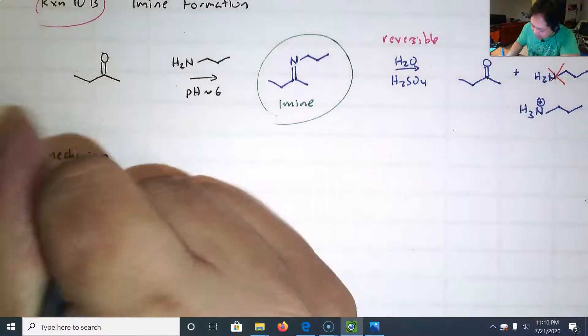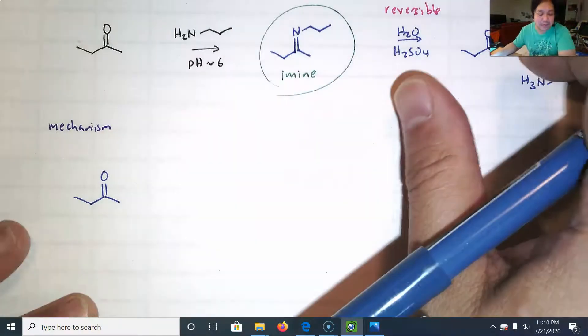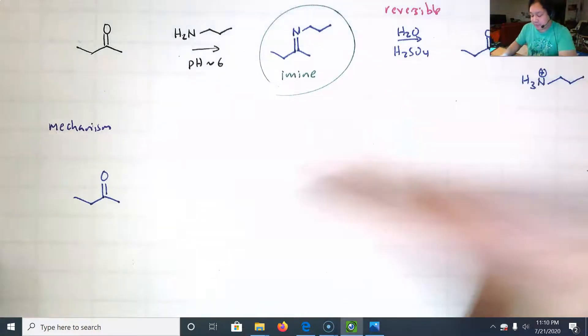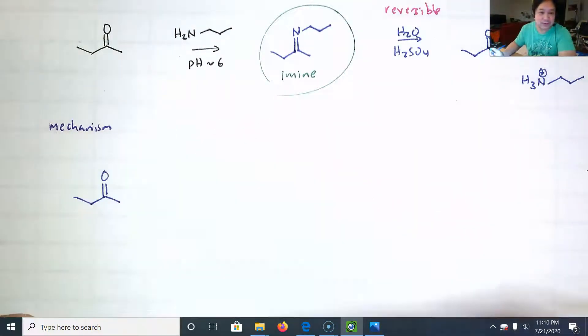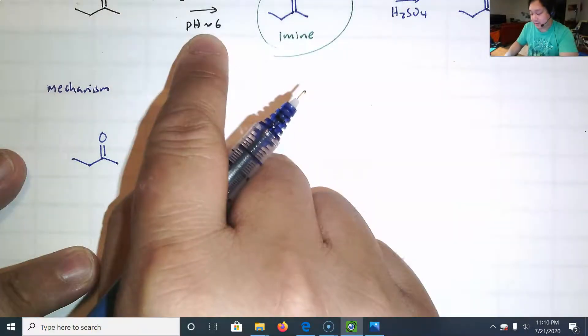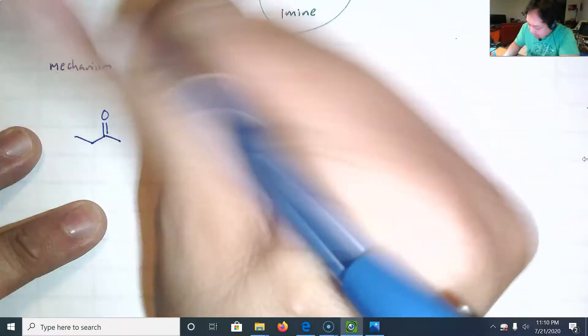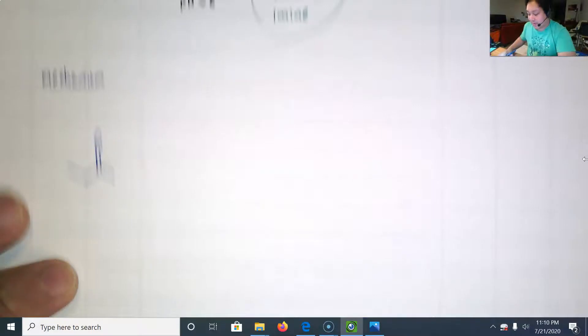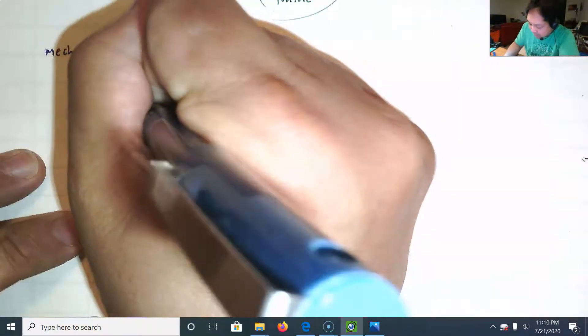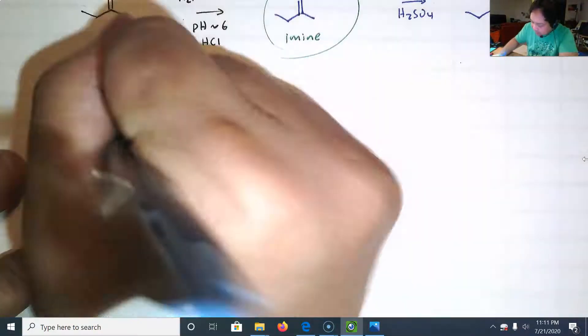This mechanism is debatable depending on what site you look at, what website you look at, or what textbook you look at. Some say the first step is direct attack by the amine. Some say you should protonate the oxygen first. It's not very acidic, right? It's close to neutral. But I'm in the camp that says go ahead and protonate. Let's say that there's HCl, a little bit of HCl. Let's protonate this ketone.